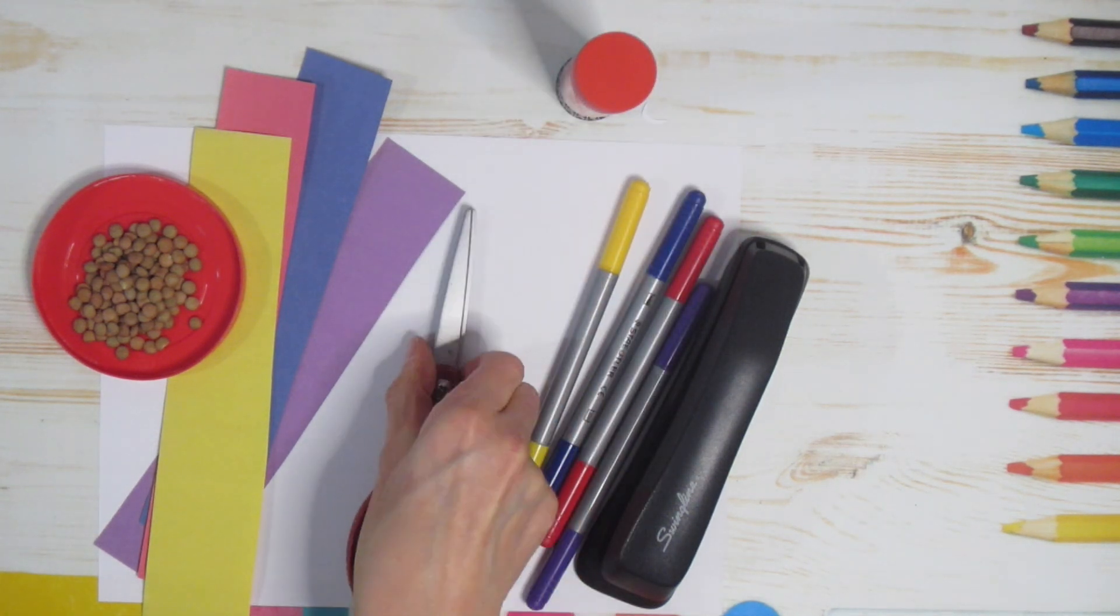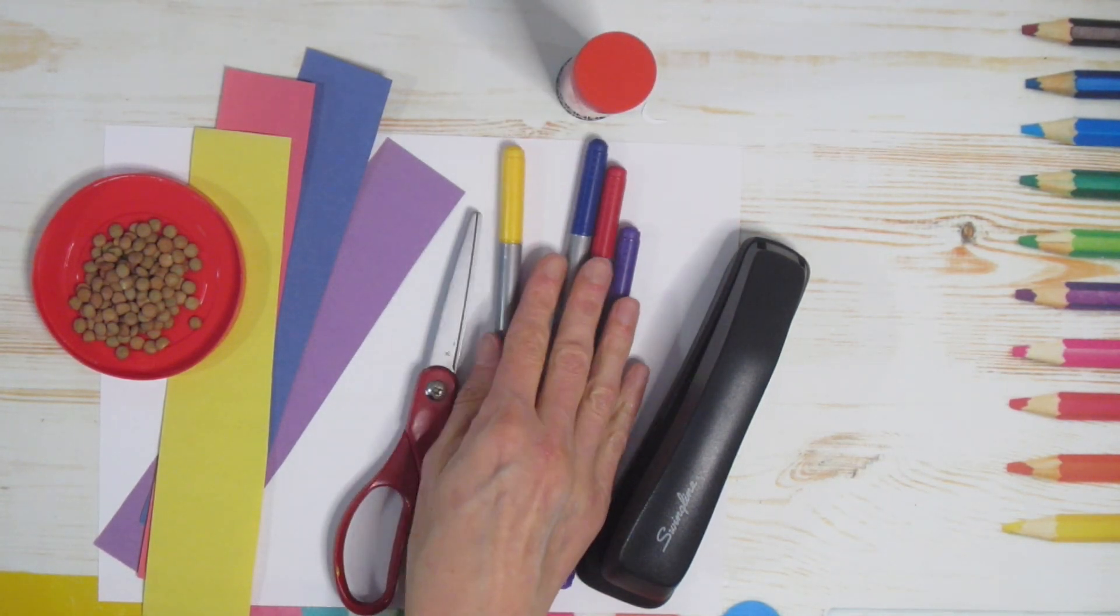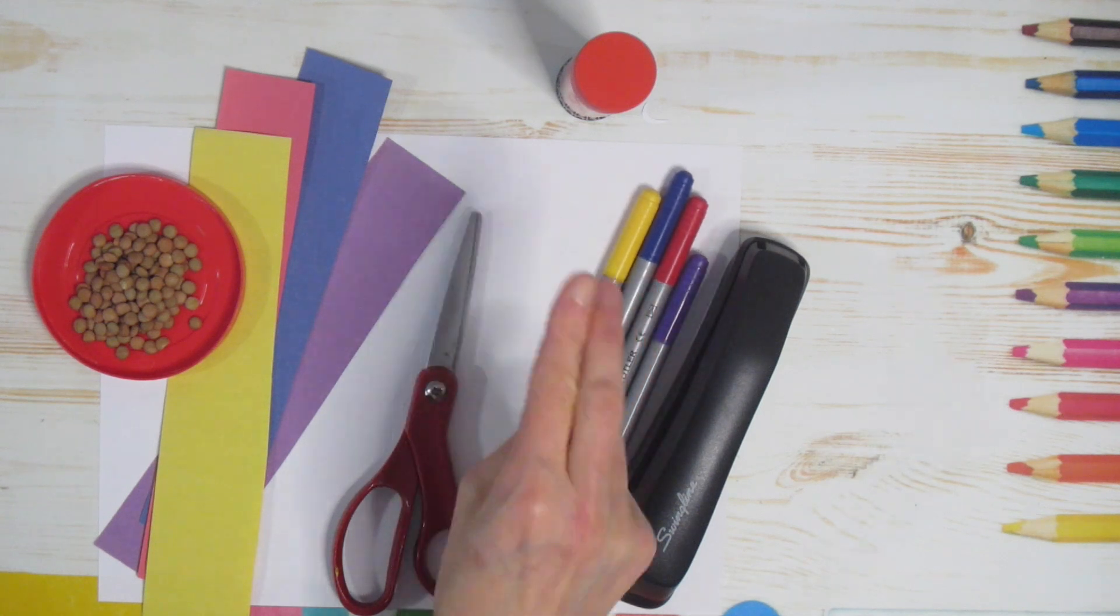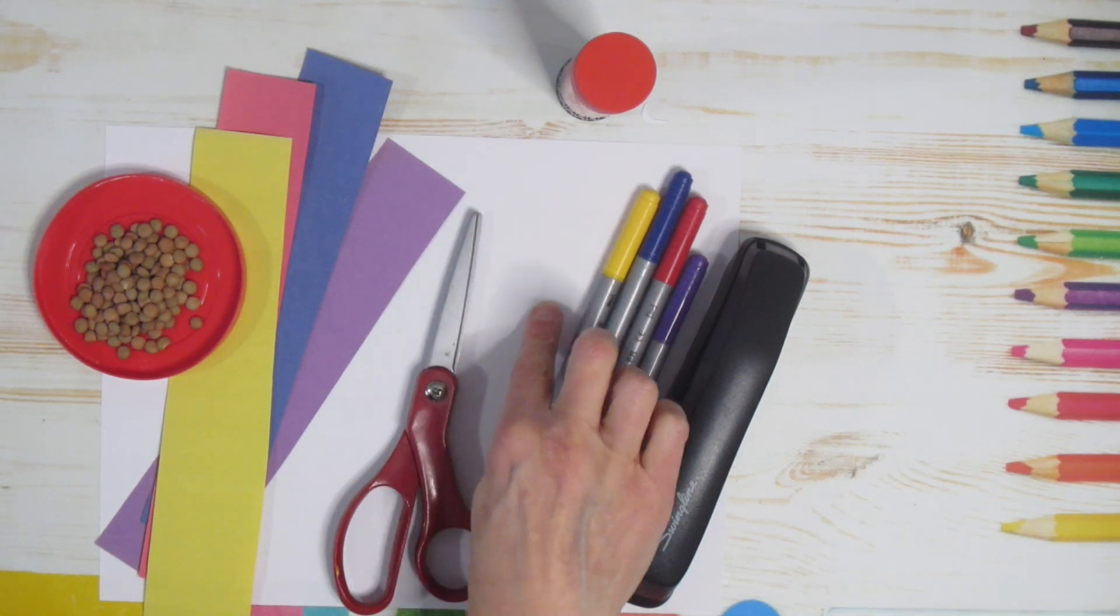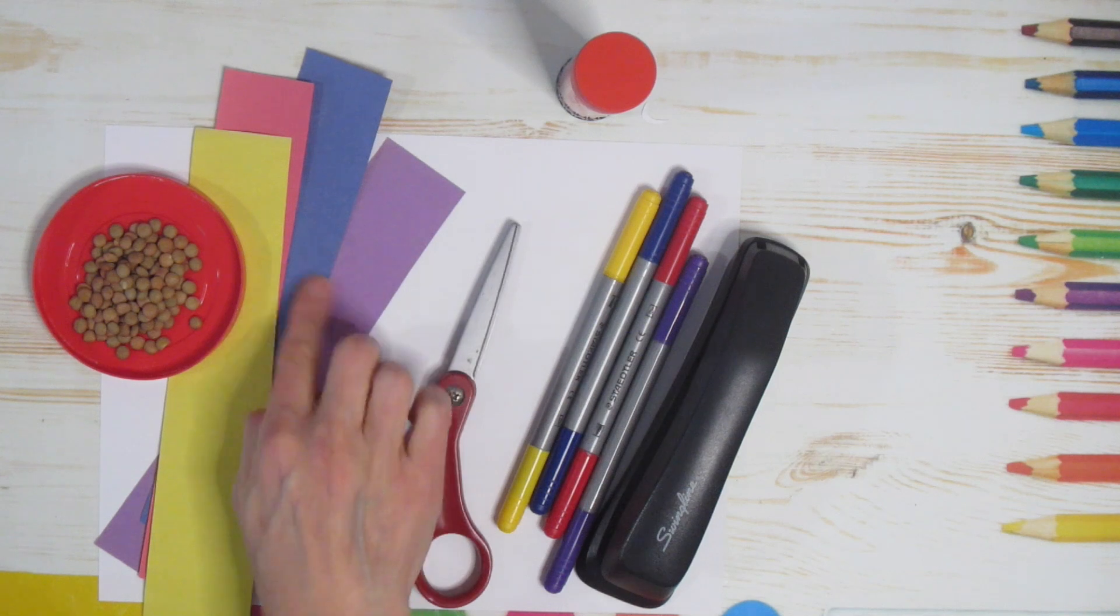Some glue, scissors, some crayons, pencil crayons or markers, something to decorate with, a piece of white paper, a larger piece of white paper, a whole bunch of different colors...